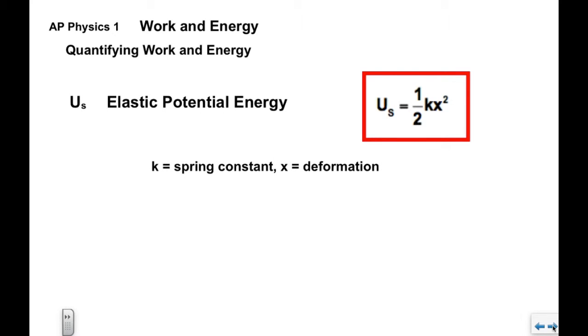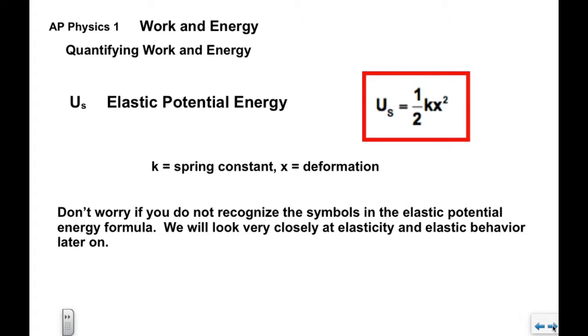Now we have U sub S, or elastic potential energy. The S typically is used to indicate spring energy. Quantified, it's one half kx squared. K is the spring constant, x is the deformation. For the time being, don't worry if you don't recognize the symbols. Next up, we're going to look very closely at elasticity and elastic behavior, and you'll learn what these quantities mean.